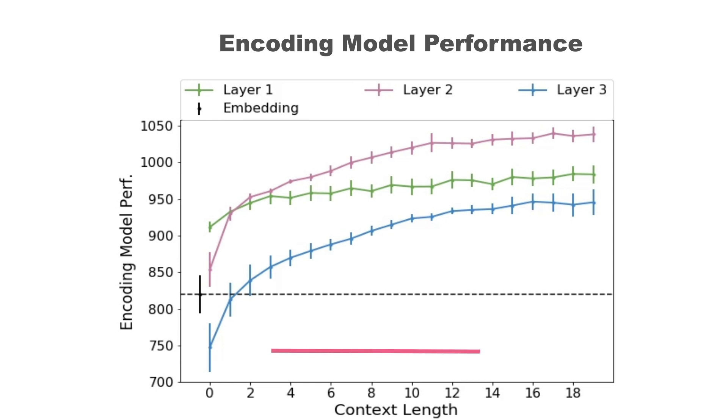However, increasing the amount of context generally improves performance across layers. The best model uses representations from the middle layer with long context.